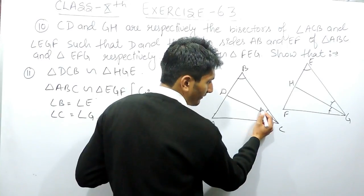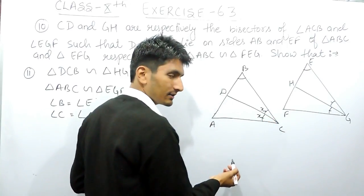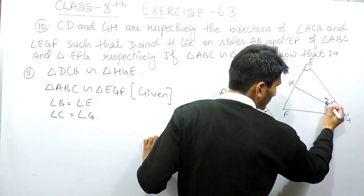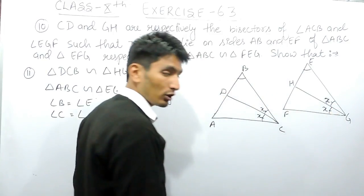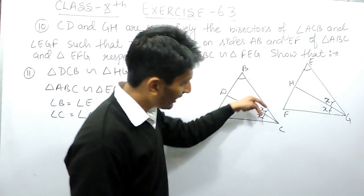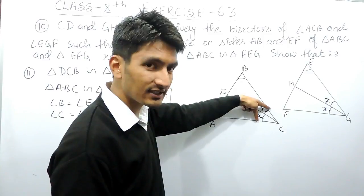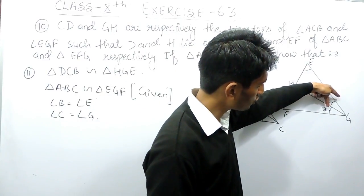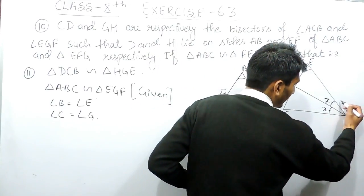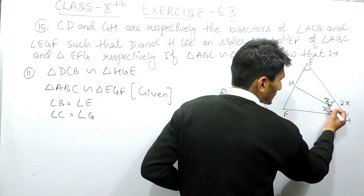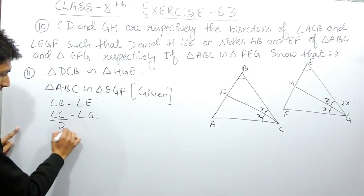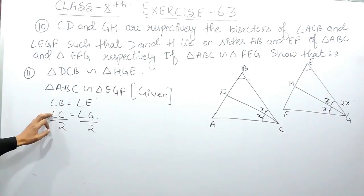Now because the angle bisector is dividing angle C — if angle C is 2x, then each half is x. Similarly if angle G is 2y, since angle C equals angle G these are the same, so each bisected half equals x as well. This means each bisected angle is half of the complete angle. So I divide angle C by 2 and angle G by 2.